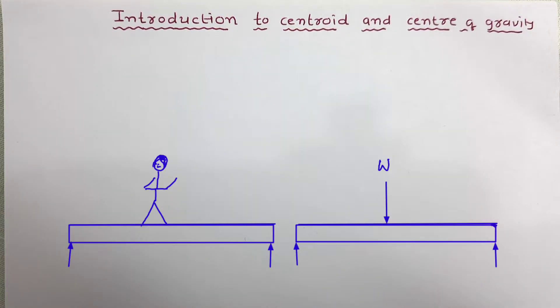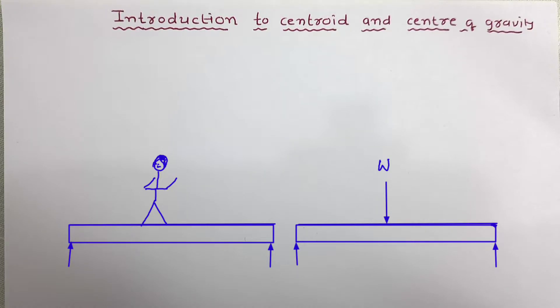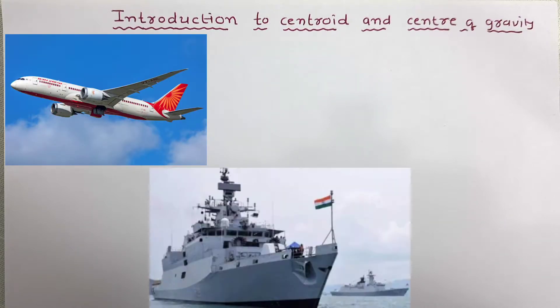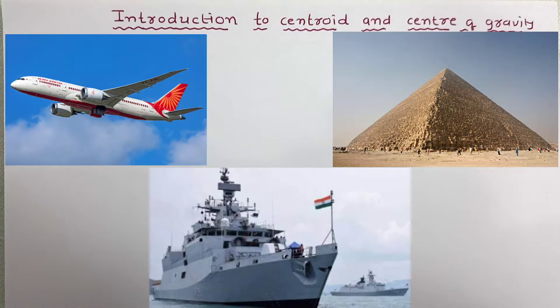In solving the problems of engineering, we idealize a body as a particle. This particle is nothing but the center of gravity of the entire body. The entire weight of the body acts through this point. Many complex structures like aeroplane, ship, pyramid, etc., need to be analyzed for their stability, and the distribution of masses should be in such a way that the center of gravity can be at the desired place.